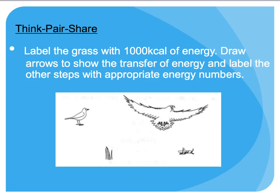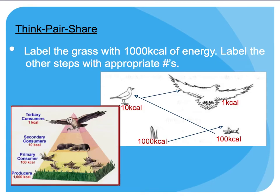Now we'll do another activity with the same picture. Draw arrows to show the transfer of energy — for example, from the grass to the grasshopper — but this time start with 1,000 kilocalories of energy for the grass and show how much energy is transferred at each level. The grass has 1,000 kilocalories; the grasshopper gets 100, the bird 10, and the large bird 1 kilocalorie, because 90% is lost (only 10% is transferred) at each step.